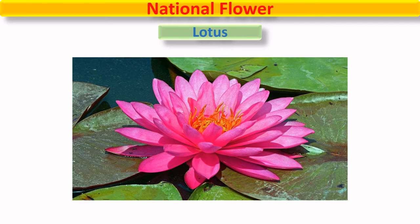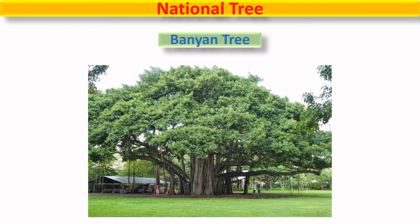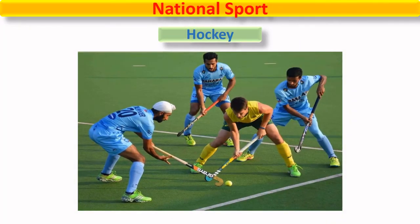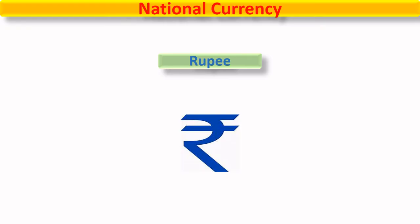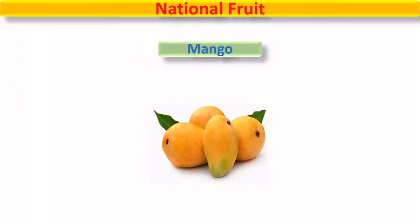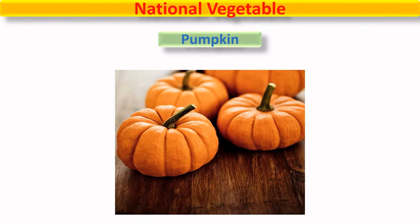Our national flower is lotus. Our national tree is banyan tree. Our national sport is hockey. Our national currency is rupee. Our national fruit is mango. Our national river is Ganga. Our national vegetable is pumpkin.